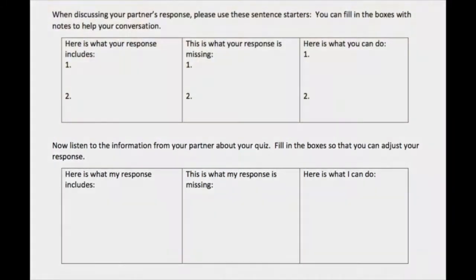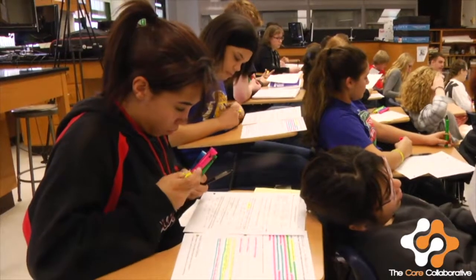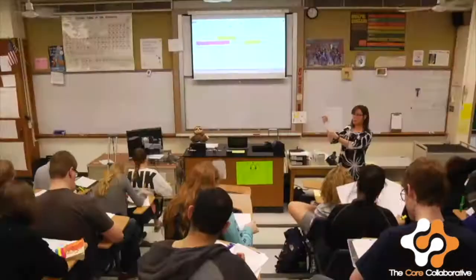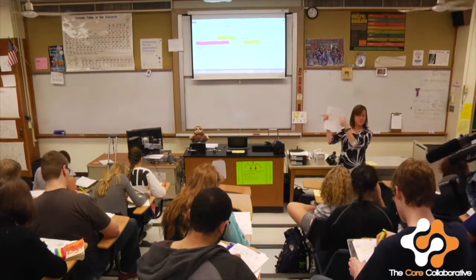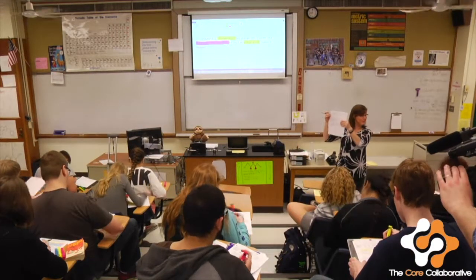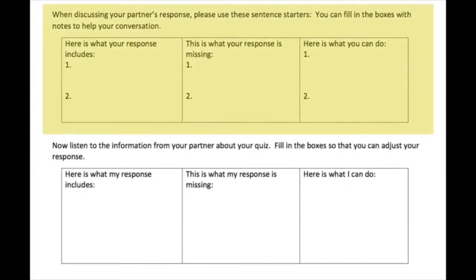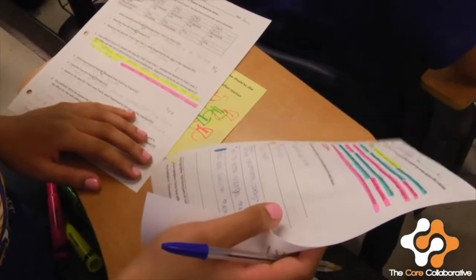So what you're doing is you're using your markers. If you're not sure what to do, do question four. You are actually looking at your partner's quiz, and then you're filling in the very top of today's sheet where it has those conversation starters. The reason there's a one and a two is you might be able to find one or two things they have, one or two things that they need. Or a different question.